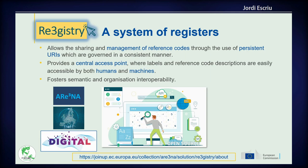The registry software is a system of registers. It allows sharing and management of these reference codes through the use of persistent URIs — persistent identifiers — which are governed in a consistent manner. Any of the items considered in the database are referenced by persistent identifiers, and you can point to these elements in your work. It provides central access points where these labels and reference code descriptions are easily accessible by both humans and machines — not only in the database, but also browsable in the front end — and fosters semantic and organizational interoperability.